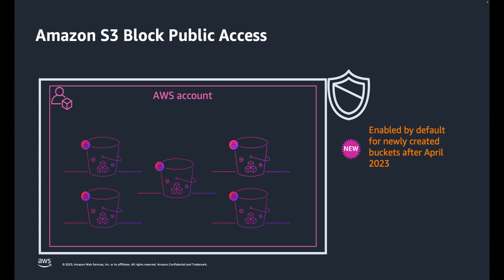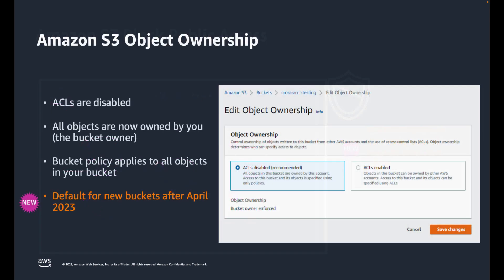Starting in April 2023, we will be making two changes to Amazon S3 to put our latest best practices for bucket security into effect automatically. Once the changes are in effect for a target region, all newly created buckets in the region will, by default, have S3 block public access enabled and access control list disabled. Both of these options are already console defaults. The options will become the default for buckets created using the S3 API, S3 CLI, the AWS SDKs, and AWS CloudFormation templates. The changes will begin to go into effect in April and will be rolled out to all AWS regions within weeks.